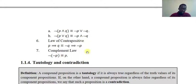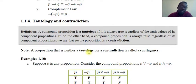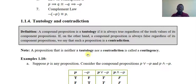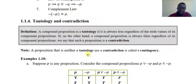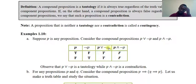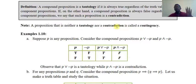A compound proposition is a tautology if it is always true regardless of the truth values of its component propositions. A contradiction is always false. A proposition that is neither a tautology nor a contradiction is called a contingency. For example, P or negation of P is a tautology — always true. P and negation of P is a contradiction — always false.